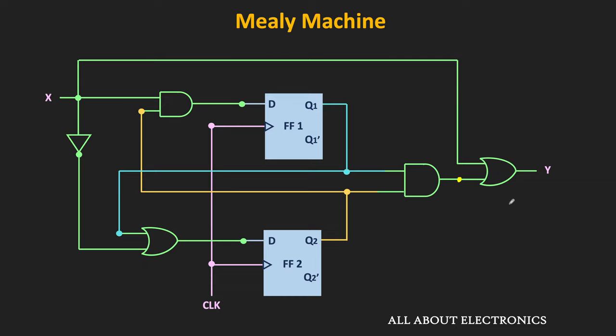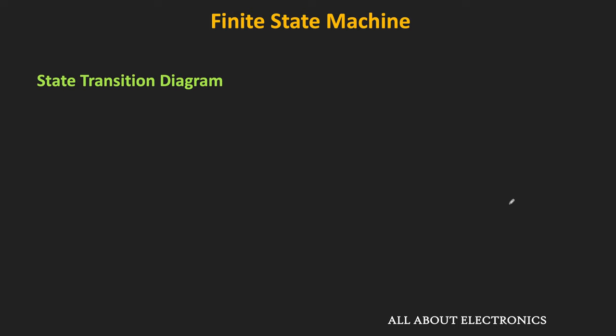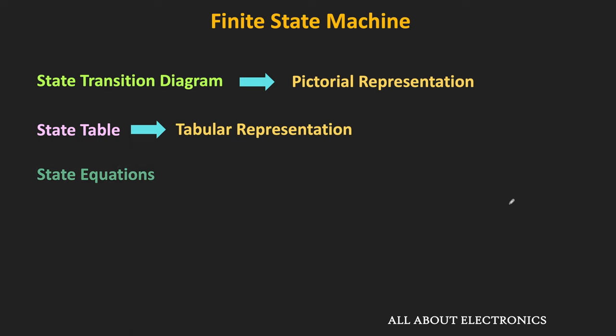Irrespective of the type of the FSM, the behavior of the machine can be represented in three different ways. The first one is the state transition diagram, which is a pictorial way of representing the behavior of the FSM. The second one is the state table, which represents the same information in a tabular form. And the third one is the state equations, which is the algebraic way of representing the same information. Using any one of these three methods we can describe the behavior of the FSM.